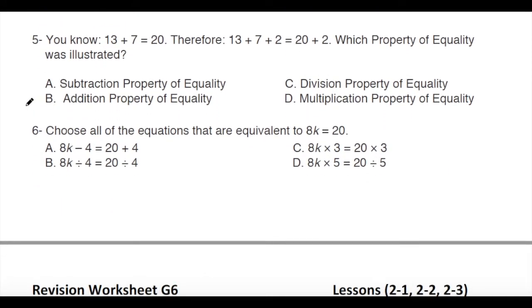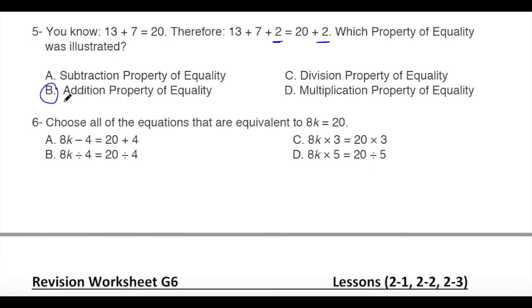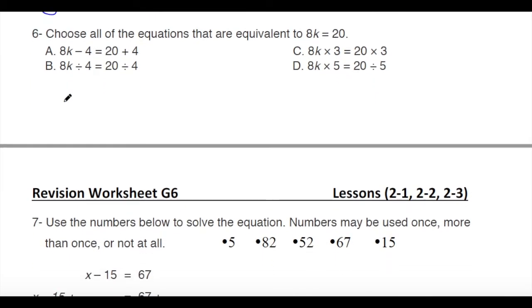Number five: given 13 plus 7 equals 20, therefore 13 plus 7 plus 2 equals 20 plus 2. Which property of equality is this? Since 2 is added to both sides, it is the addition property of equality. Now choose all equations equivalent to 8k equals 20.